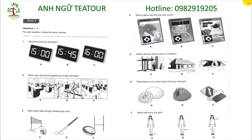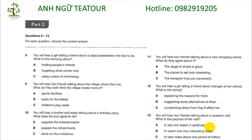That is the end of Part 1. Now turn to Part 2. Questions 8 to 13. For each question, choose the correct answer. Question 8: You will hear a girl telling a friend about a class presentation she has to do. What is she worrying about?